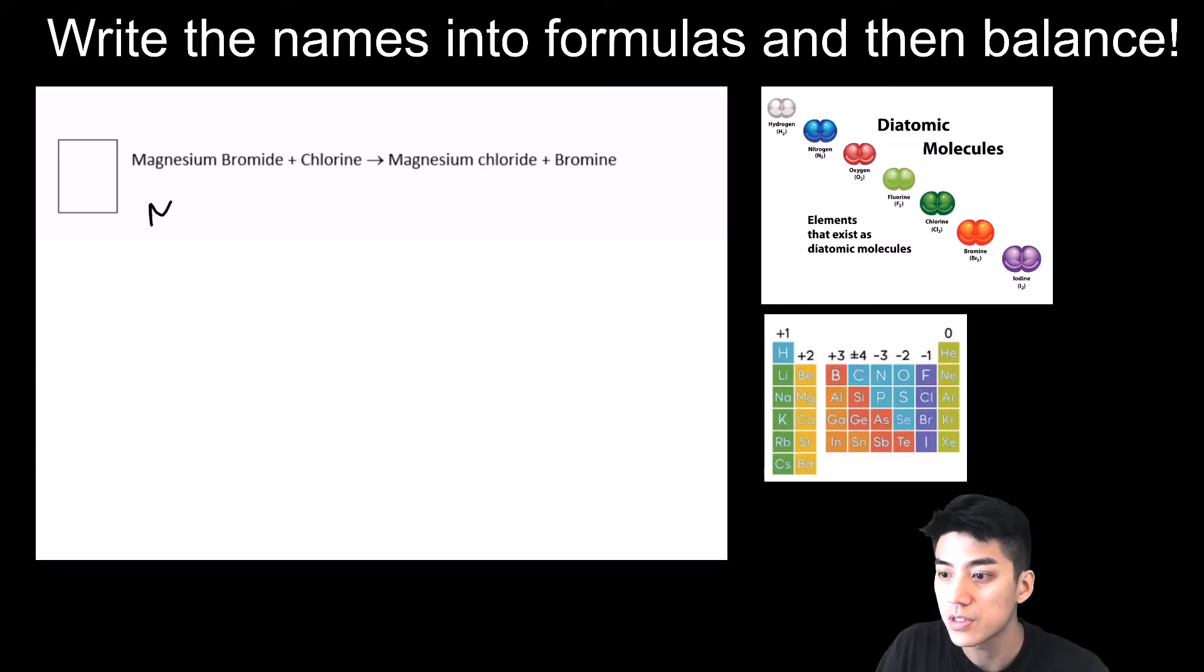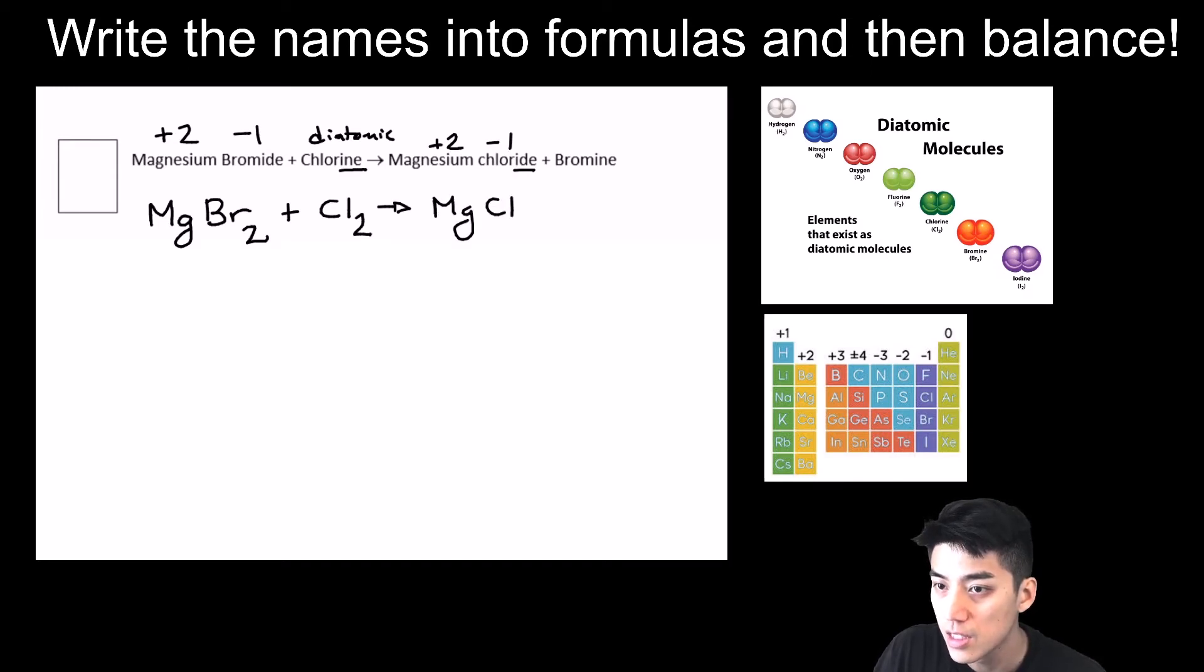Let's change the names into formulas first, and then we'll balance. Magnesium bromide is MgBr2, because you have to crisscross the charges. Magnesium is +2, bromine is -1. When you crisscross it, you're going to get MgBr2. Chlorine is a diatomic, it's one of the seven diatomics, so you're going to write Cl2. This will make magnesium chloride. Again, you have to crisscross the charges. By coincidence, you're going to get MgCl2. I understand it's diatomic, but that's actually from the charge. And then bromine is one of the seven diatomics, you're going to write Br2.